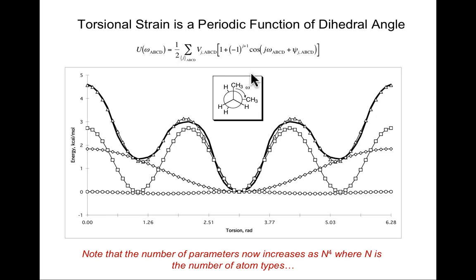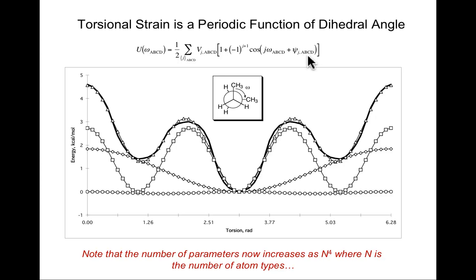For torsions, all the constants chiseled into the stone tablets — the number of Fourier terms, the amplitudes, the phase angles — increase as n to the fourth power, where n is the number of atom types. That can get very large very fast.